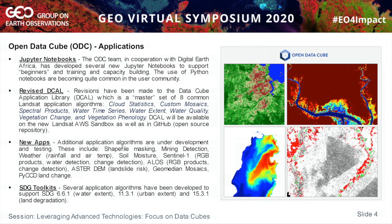We're not forgetting about the Sustainable Development Goals — this is a focus of much of what we're doing. We're writing algorithms to directly support three SDGs: water, urban, and land degradation. I wouldn't say any one of these algorithms is an end-to-end solution, but I do believe it could have significant impact for users and allow them to do a large portion of what is necessary for reporting. I see it as something that could be part of the toolkit.